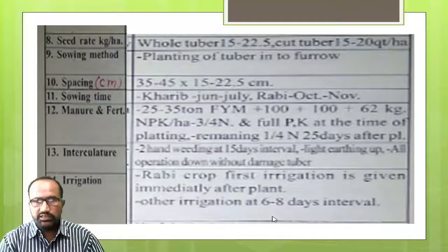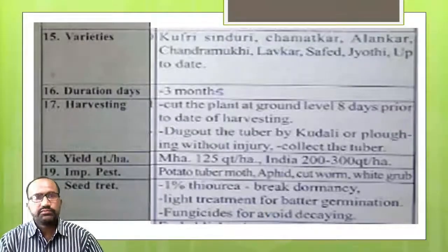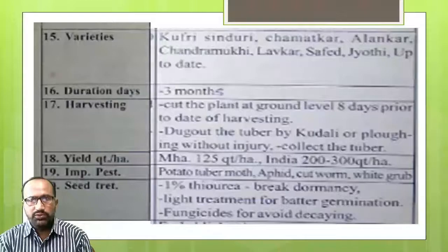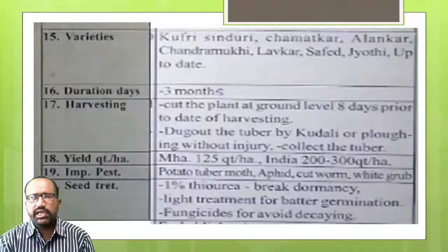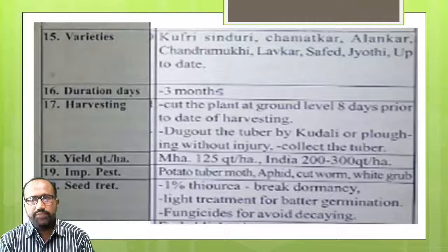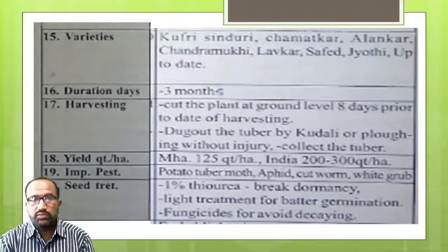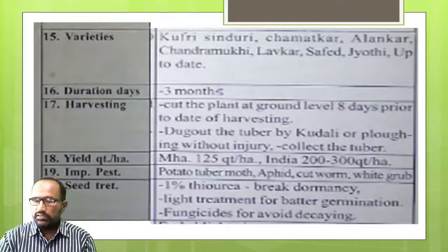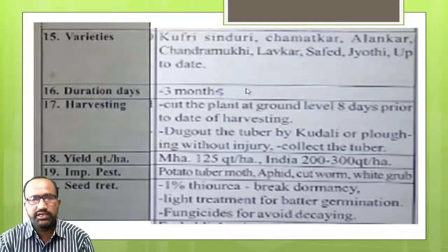Varieties: Chandramukhi, Jyoti, and others. Duration depends upon the type of variety — generally 3 months, meaning 90 days.